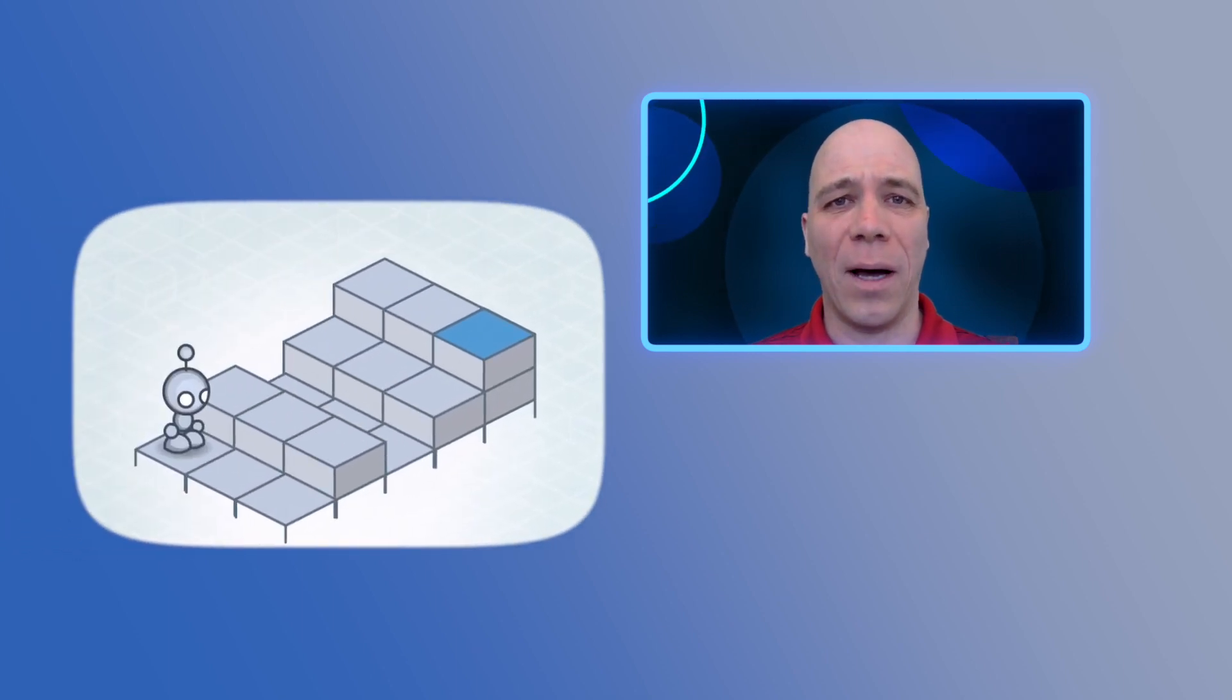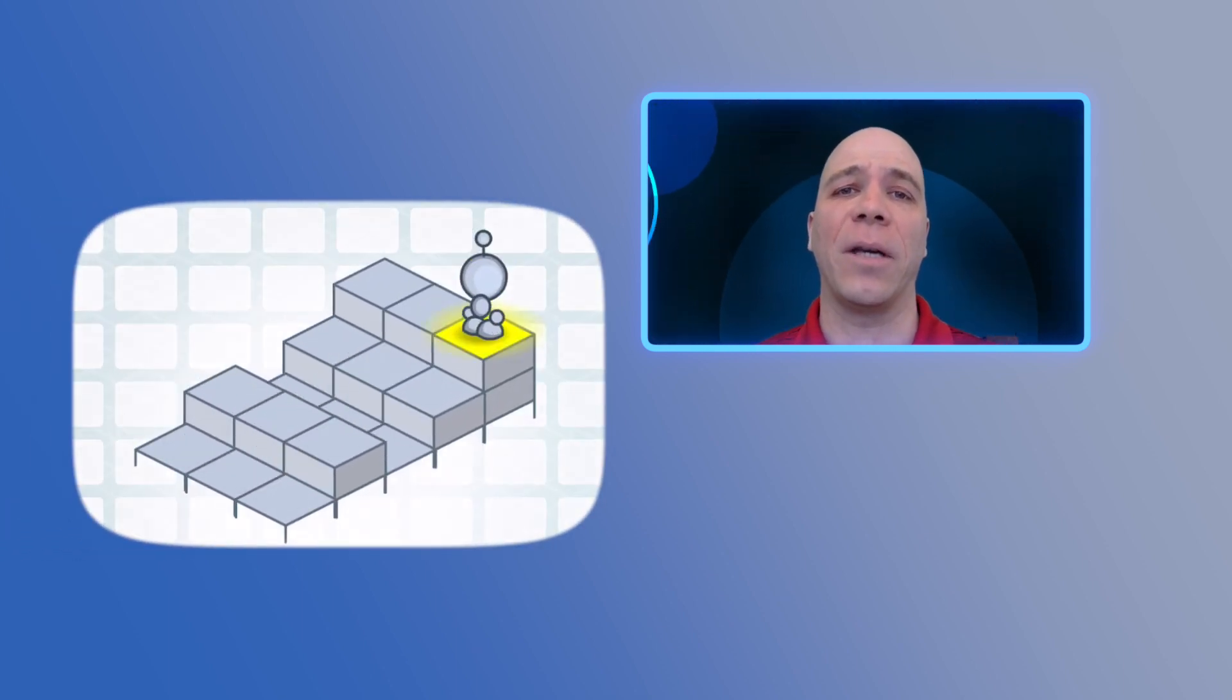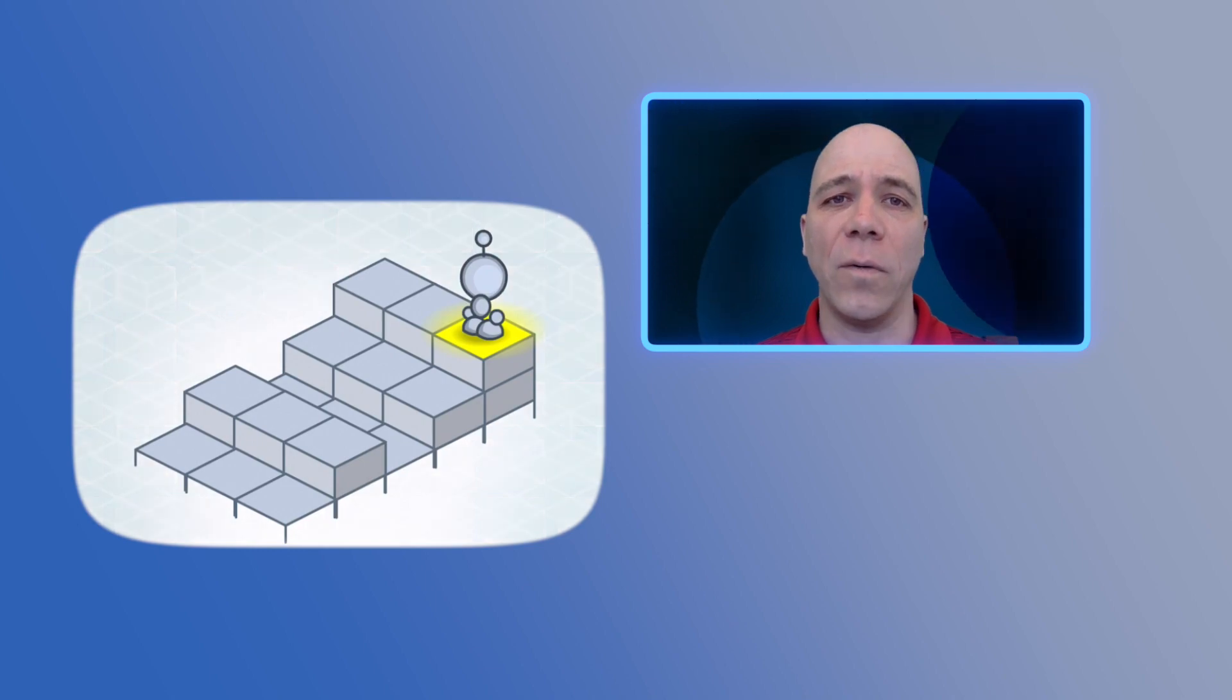The object in Lightbot is to code your robot using simple coding commands to light up all the blue tiles on the grid. The commands you can use are as follows.